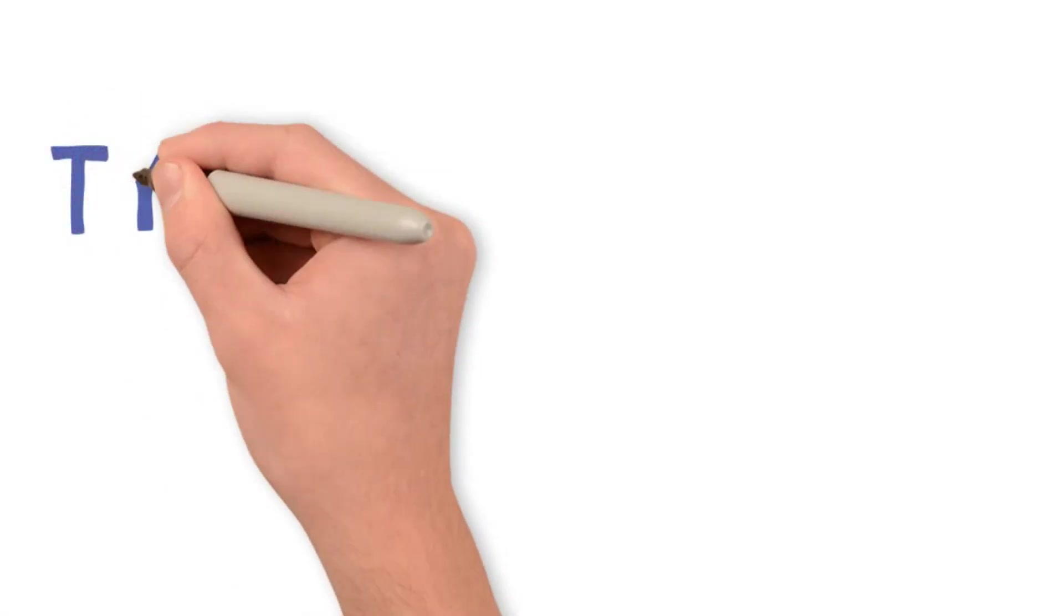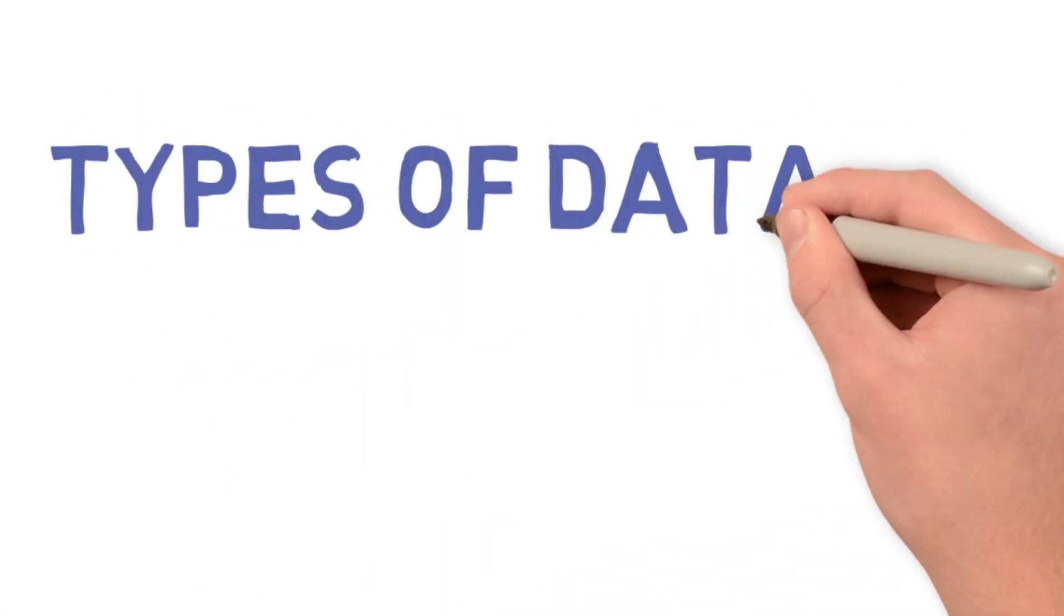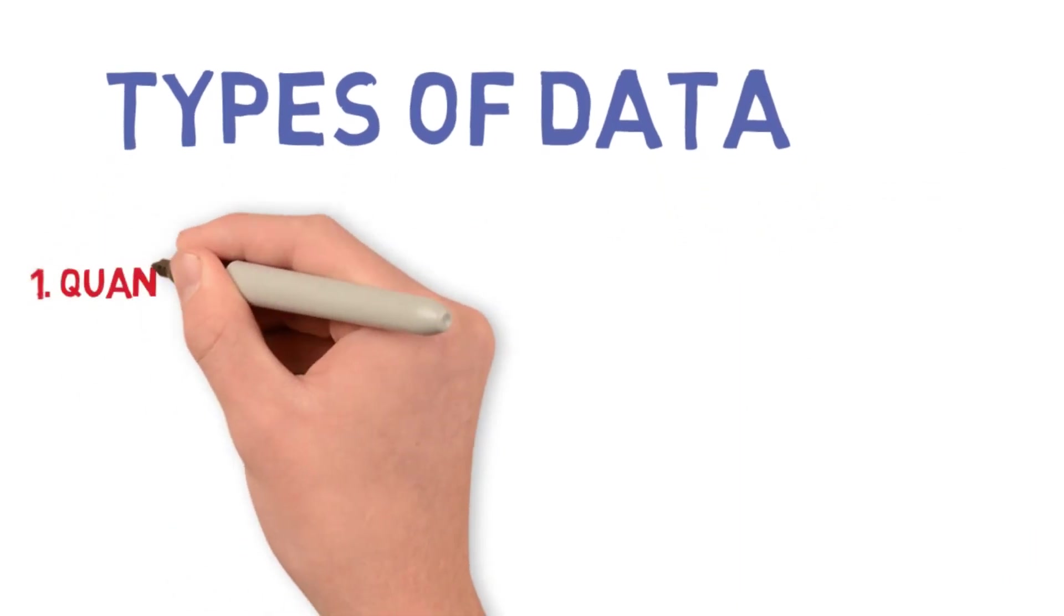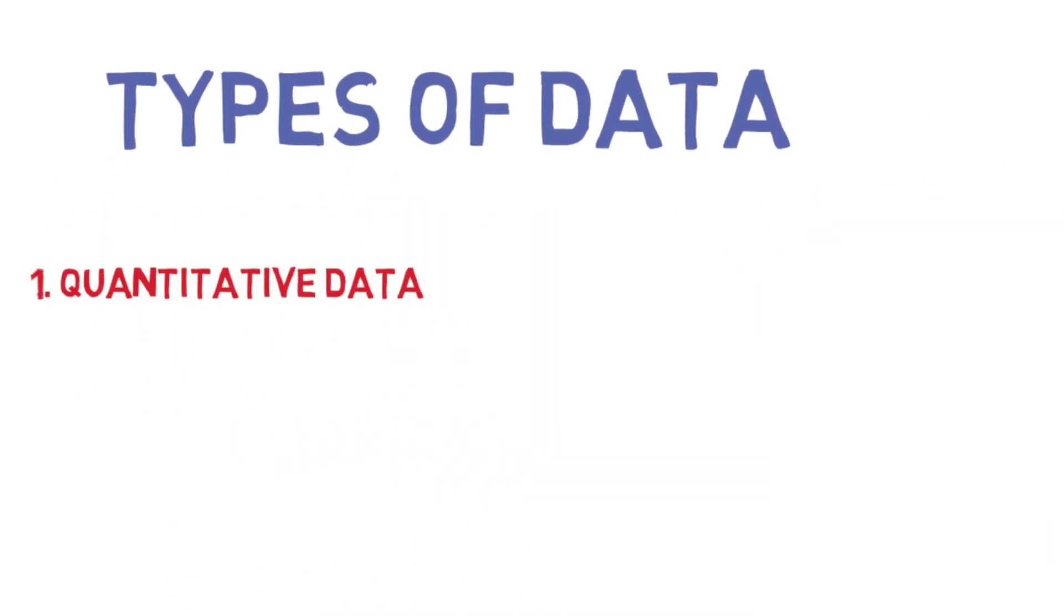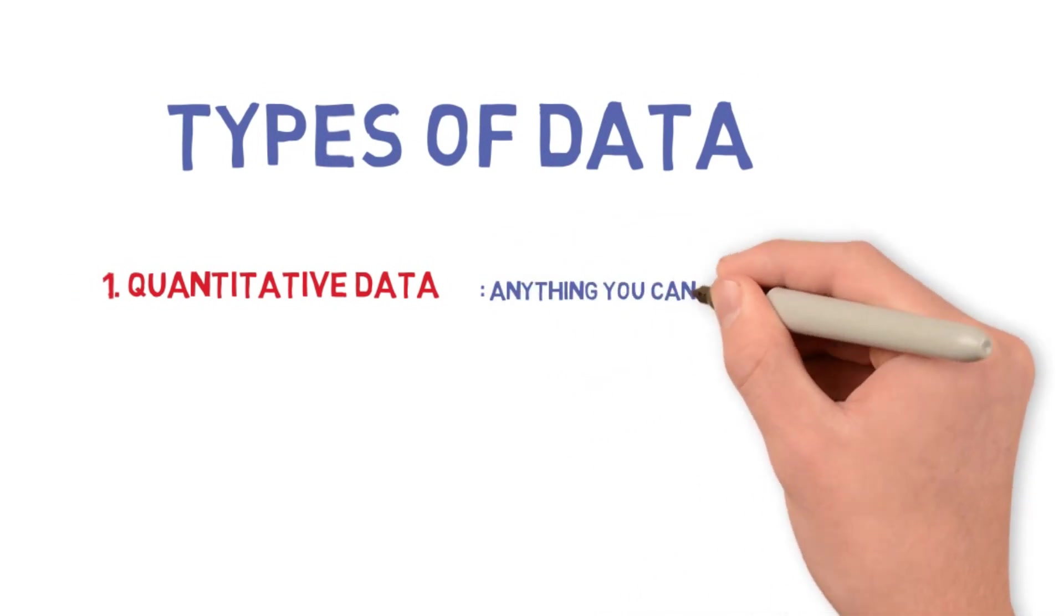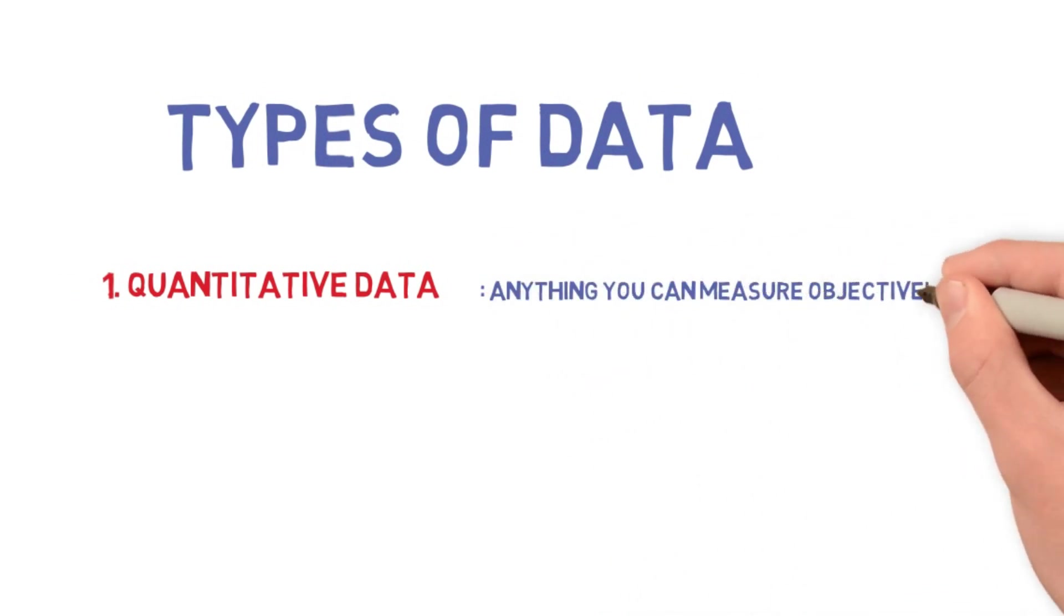Let's now take a look at some of these data types. The first one is quantitative data. Anything you can measure objectively is called quantitative data.